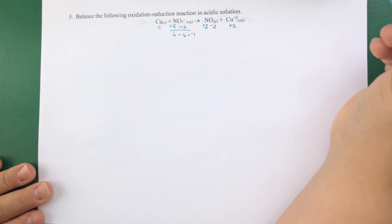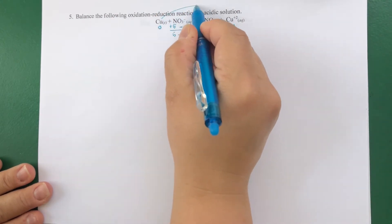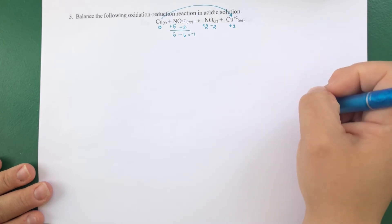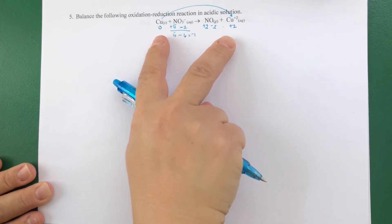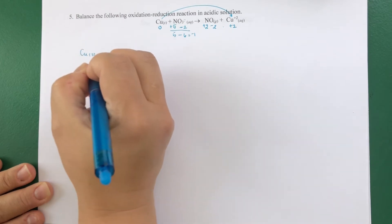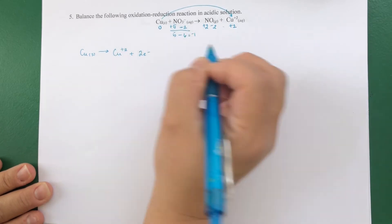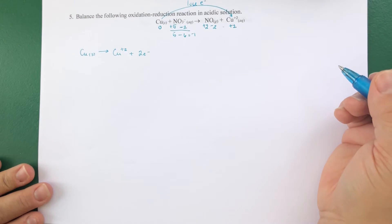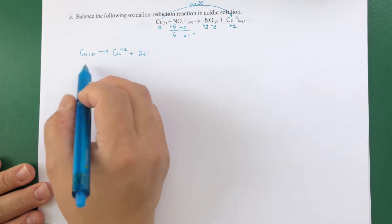Copper already has a charge, so the oxidation number equals that charge. Copper goes from zero to plus 2 — it becomes more positive, meaning it loses electrons. Copper and copper ions stay in the same half-reaction. Writing the copper half-reaction: Cu solid → Cu²⁺, losing two electrons. The coppers are balanced and there are two electrons, so this half-reaction is essentially set — no oxygens or hydrogens to balance.